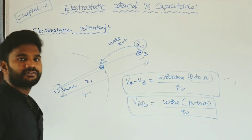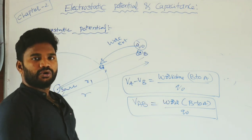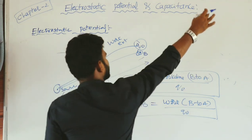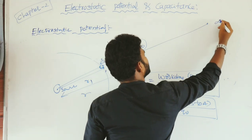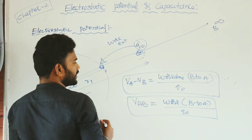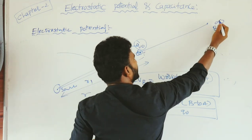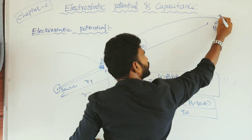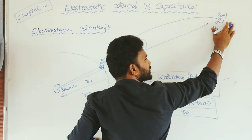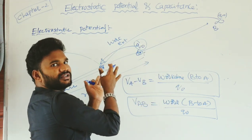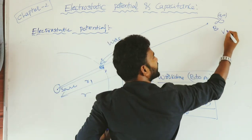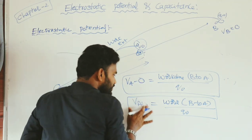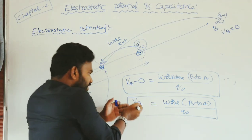Now you can come back to the basic definition of potential. If point B is at infinity distance, then VB equals zero. Using the same formula: the work done to bring the Q0 test positive charge from infinity distance to point A divided by Q0 is called potential — not potential difference. Because VB equals zero, the B term vanishes, and we get directly the potential at point A.